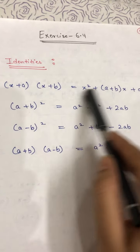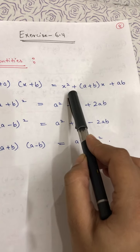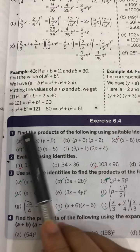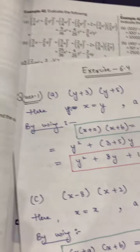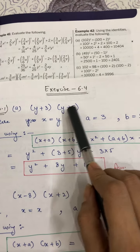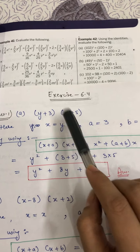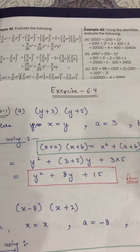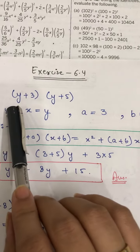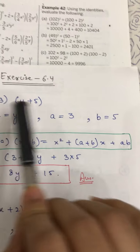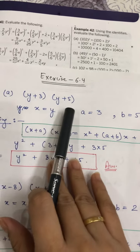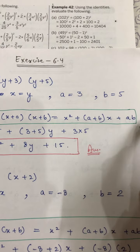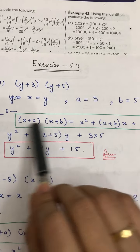In question number one and two we apply the first identity: (x+a)(x+b) = x² + (a+b)x + ab. The first part is (y+3)(y+5). We can see that y and y are the same, but the constants in each bracket are different. So we assume x = y, a = 3, and b = 5, then apply the formula.